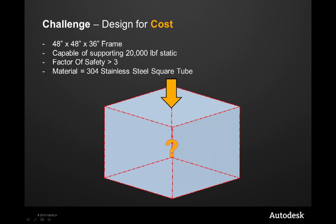For the first design, let's create a frame out of structural steel tubing. The requirements for this design are displayed on the screen. We know that much of the final cost of a product is determined by decisions engineering makes during the design phase. So how can we leverage simulation to evaluate the multitude of conceptual designs and ultimately arrive at a lower cost design?